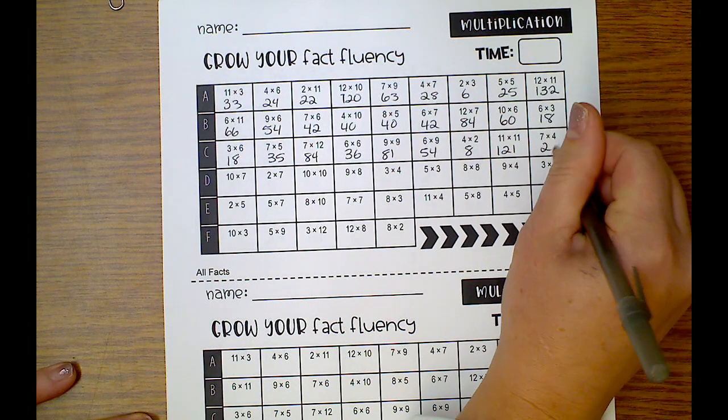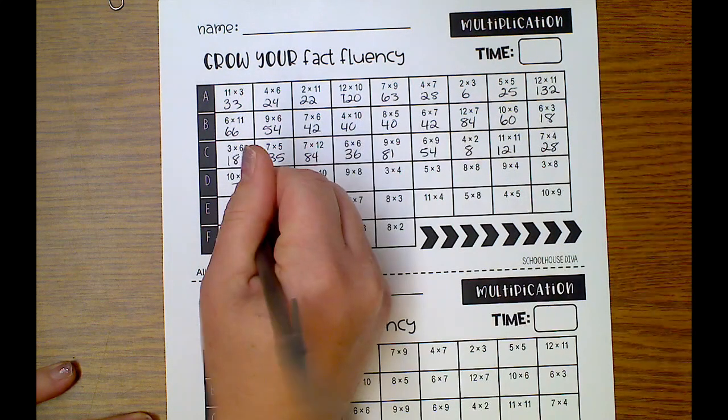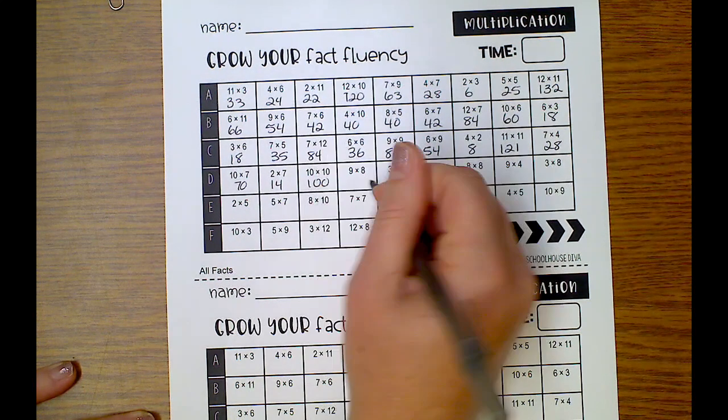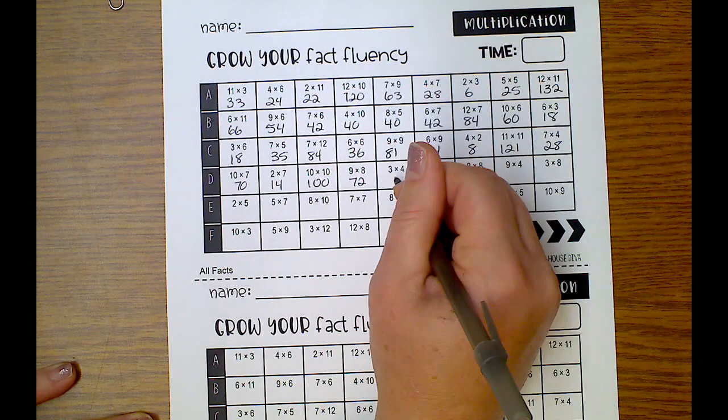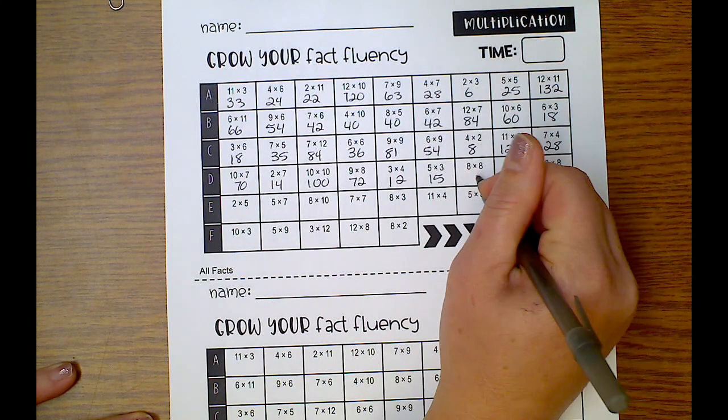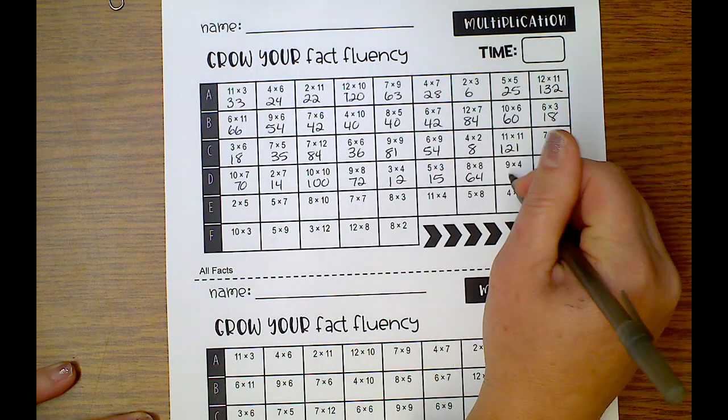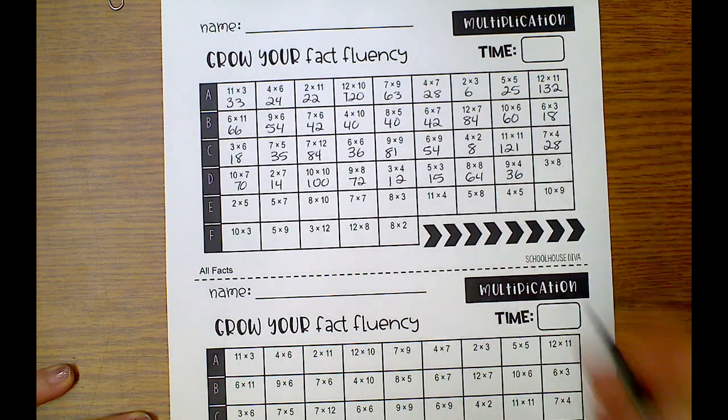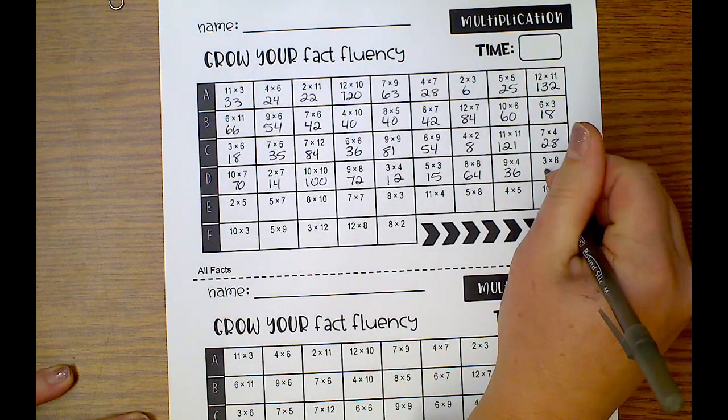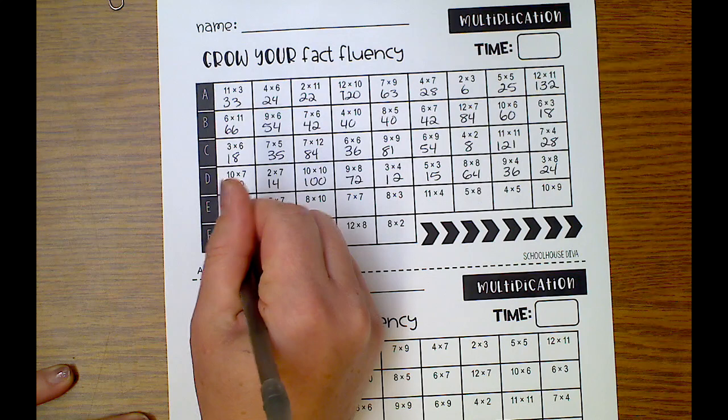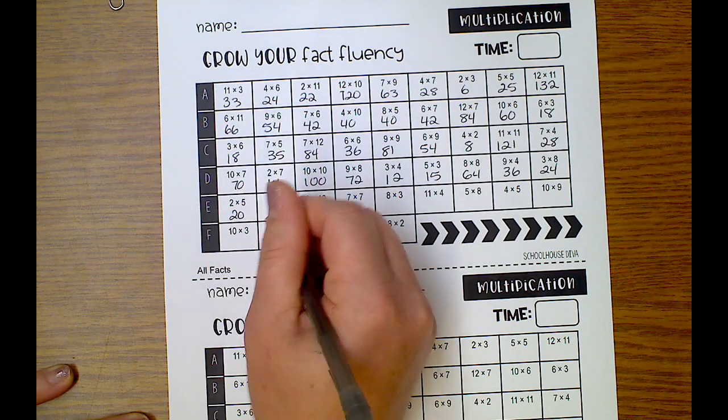times 4 is 28, 10 times 7 is 70, 2 times 7 is 14, 10 times 10 is 100, 9 times 8 is 72, 3 times 4 is 12, 5 times 3 is 15, 8 times 8 is 64, 8 times 4 is 36, 8 times 3 is 24, 2 times 5 is 20. Oh my gosh, no!